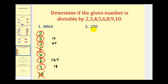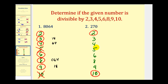Let's try one more — the number 270. It ends in a 0 and therefore is even, so it's divisible by 2. Since it ends in a 0, we also know it's divisible by 10 as well as 5. To determine if it's divisible by 3, we sum the digits: 2 plus 7 plus 0 equals 9. Since 9 is divisible by 3, so is the given number.